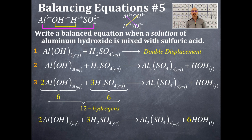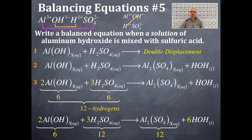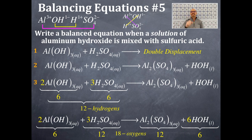This is balanced, but we do a check with oxygens. On the reactant side: Al(OH)₃ gives six oxygens, H₂SO₄ gives twelve oxygens. On the product side: Al₂(SO₄)₃ gives twelve oxygens, water gives six oxygens. Both sides total eighteen oxygens. You have successfully balanced this equation.